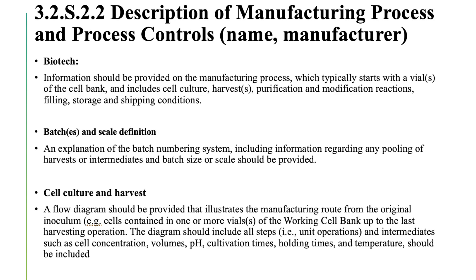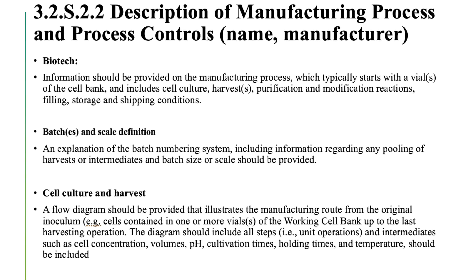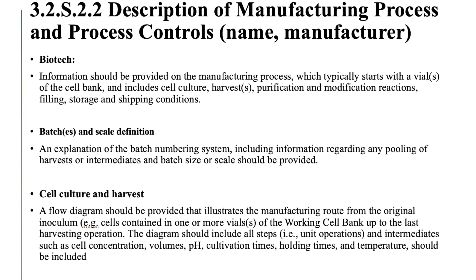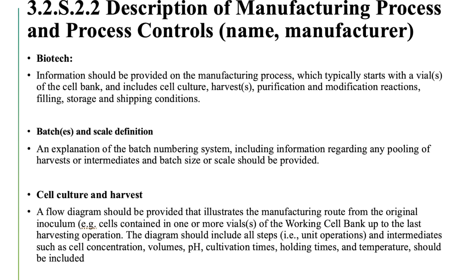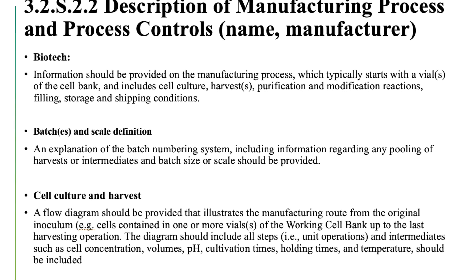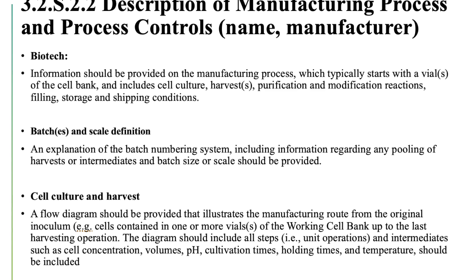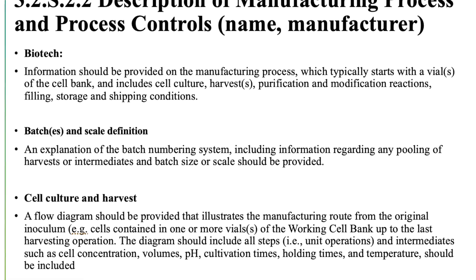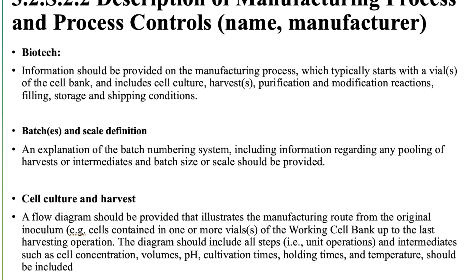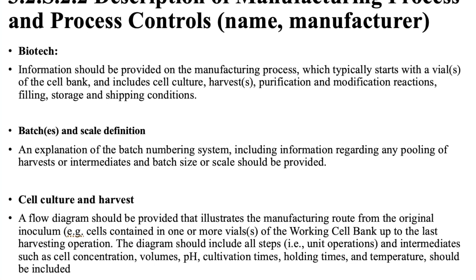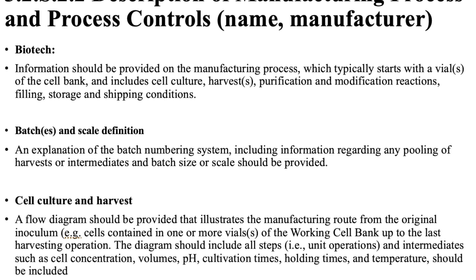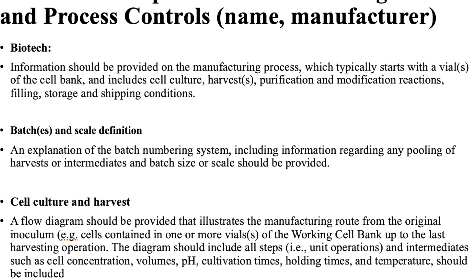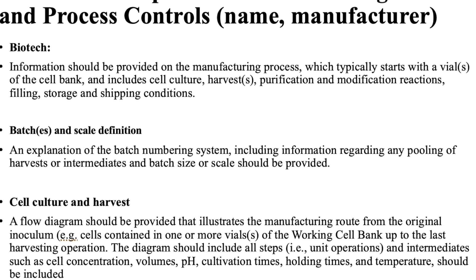3.2.S.2.2 Description of Manufacturing Process and Process Controls (Biotech): Information should be provided on the manufacturing process, which typically starts with a vial of the cell bank, and includes cell culture, harvest, purification and modification reactions, filling, storage, and shipping conditions. Batch and scale definition and explanation of the batch numbering system, including information regarding any pooling of harvests or intermediates and batch size or scale, should be provided. A flow diagram should be provided illustrating the manufacturing route from the original inoculum — for example, cells contained in one or more vials of the working cell bank — up to the last harvesting operation. The diagram should include all steps (unit operations) and intermediates such as cell concentration, volumes, pH, cultivation times, holding times, and temperature.